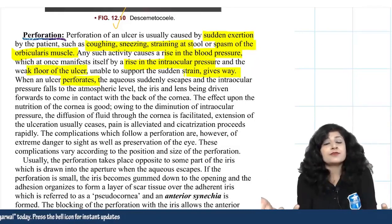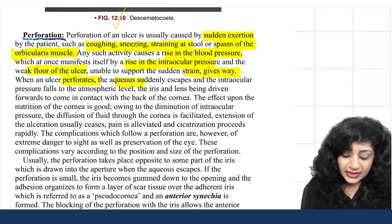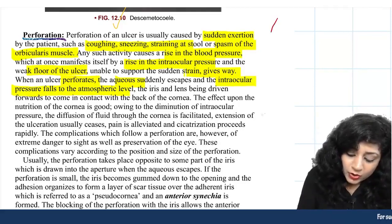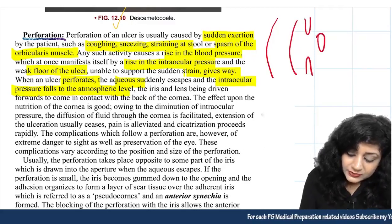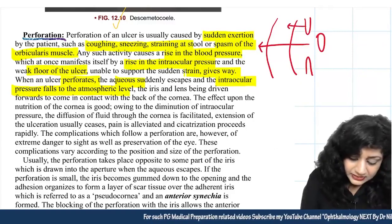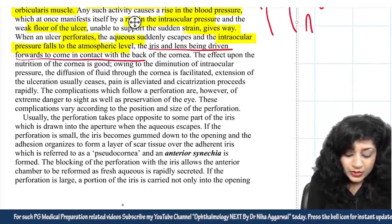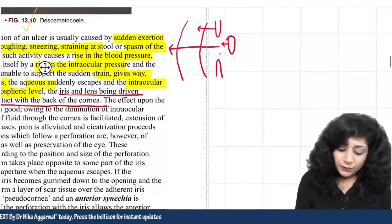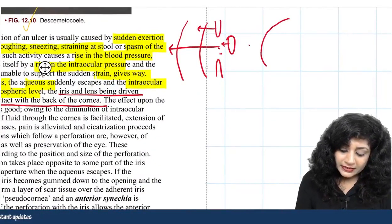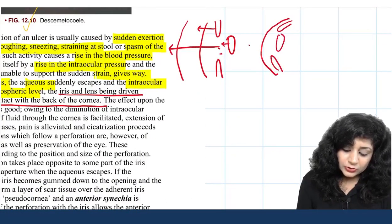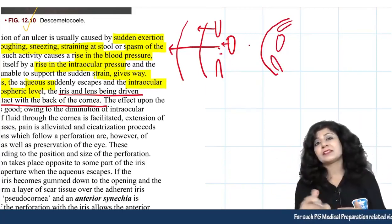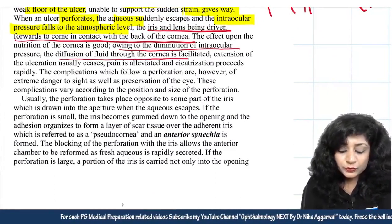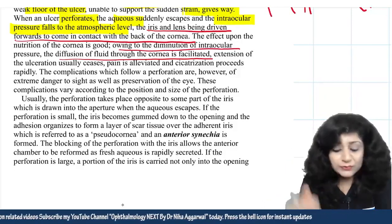When perforation occurs, aqueous humor rushes out, intraocular pressure falls to atmospheric level, and the iris and lens are driven forward to contact the back of the cornea. This forms an ictatic configuration. The iris and lens prolapse forward, creating a bunch-of-grapes-like appearance — hence the term 'staphylos.' Nutrition of the cornea improves due to diminished intraocular pressure, and pain is alleviated as secretarization proceeds rapidly.